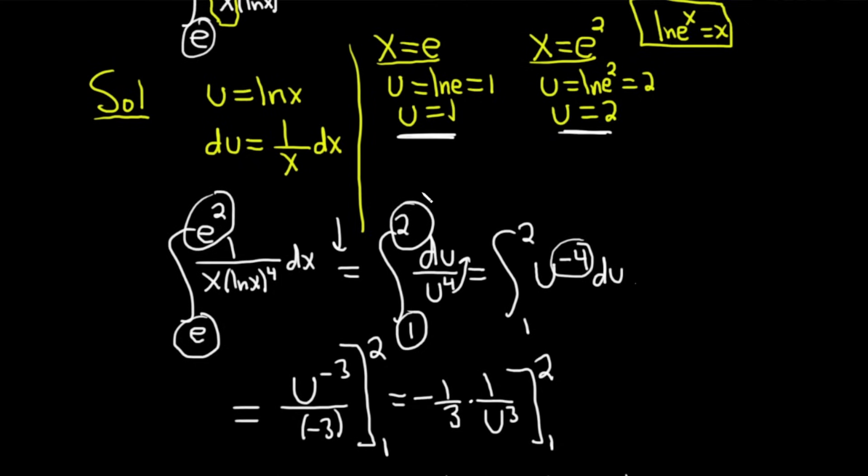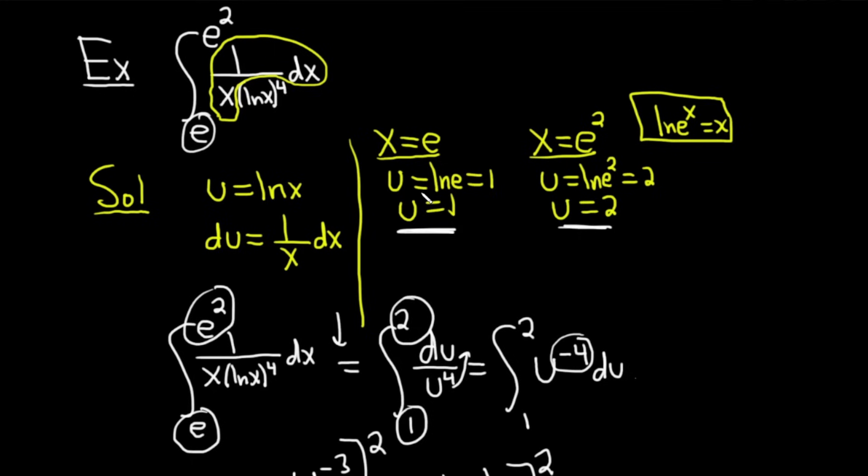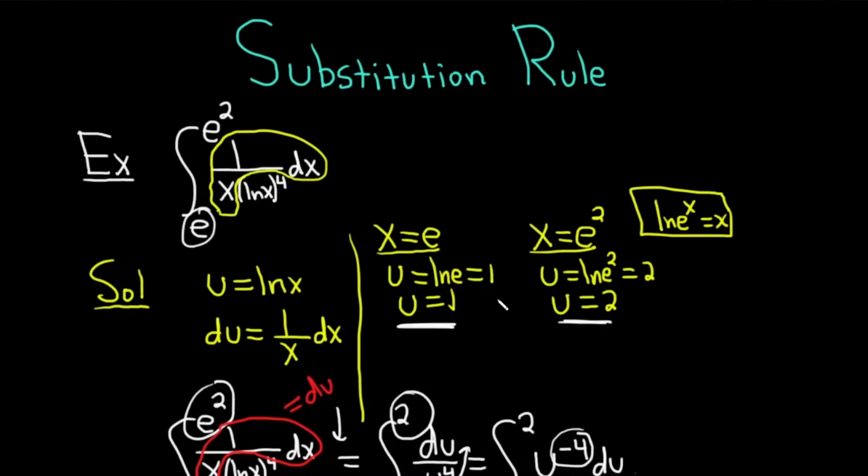And then of course, the rest of the substitution is important as well. u was ln x. That became a u to the fourth. And this piece here, let me circle it in red. This 1 over x dx, all of that, that's just du, right? That's your du. That's the part on the top. And this bottom piece here was u. So you just got u to the fourth. Hopefully you've learned some math in this video. Until next time, good luck.